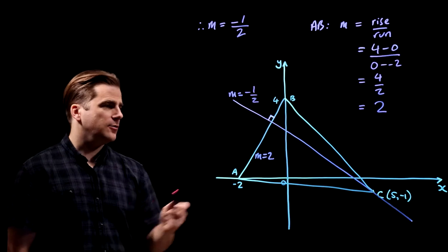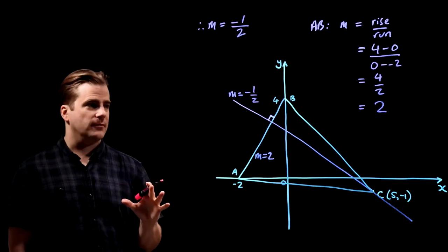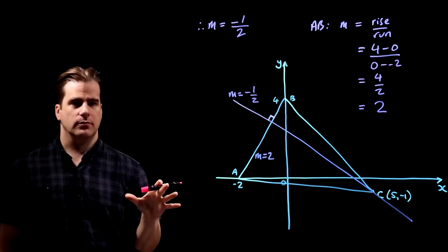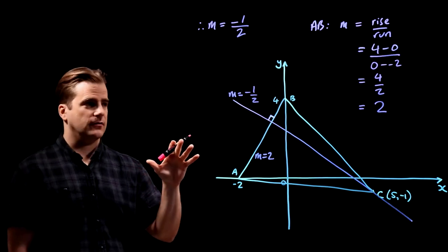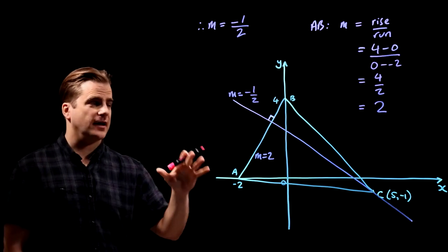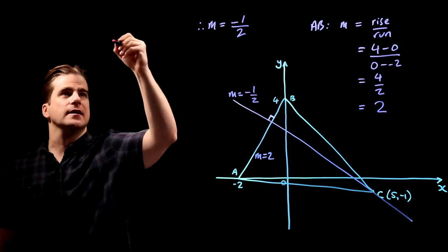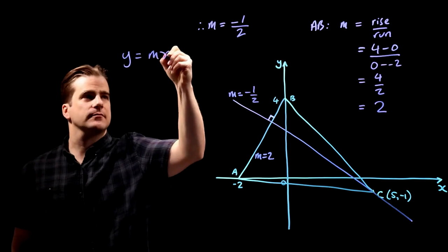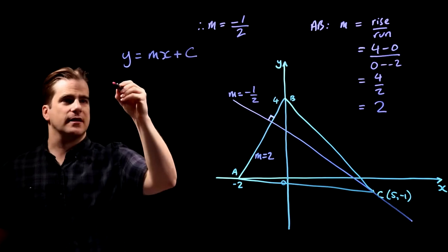So how do we go from there to the actual equation of the line? Well, there are two equations for expressing the equation of a straight line. You've probably seen y equals mx plus c. That's one of them. The other one is this.